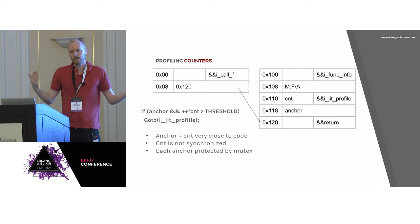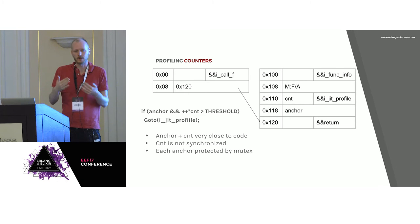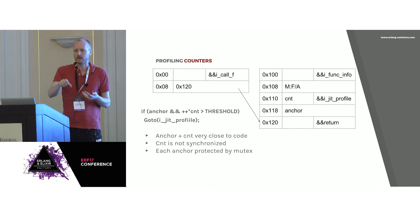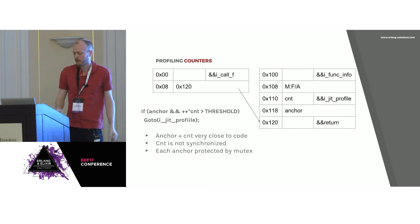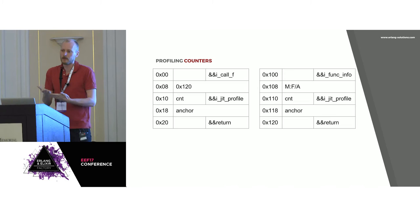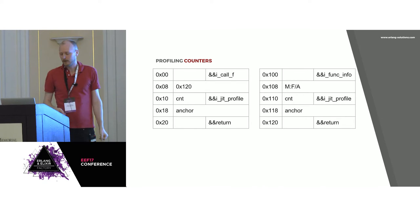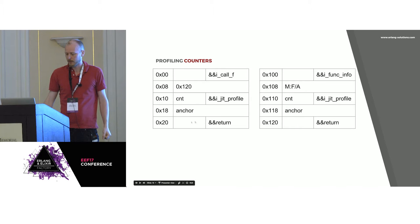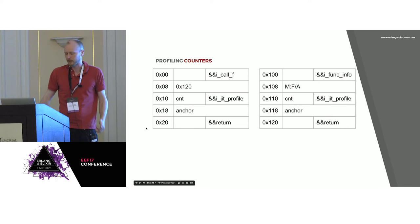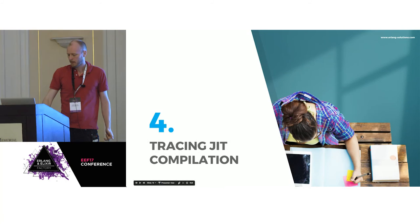This is done by all schedulers at all times, so it's very racy — potentially 64 threads banging on this counter at the same time, and one or more will find that the counter has gone above the threshold. Before we start tracing, there is a mutex inside the anchor pointer that needs to be taken — that's how we synchronize multiple threads trying to do tracing. For returns, the same thing is done: a profiling instruction in the return increments the counter, and if it's above threshold, puts a trace on that process.